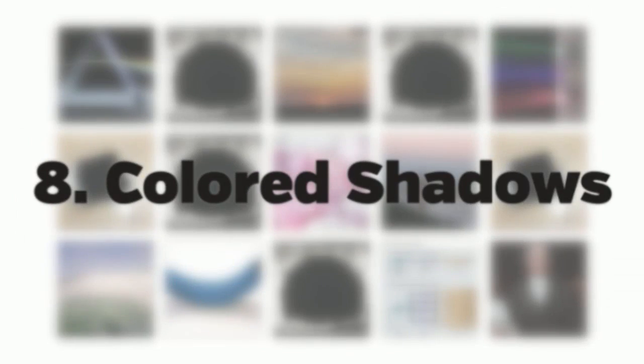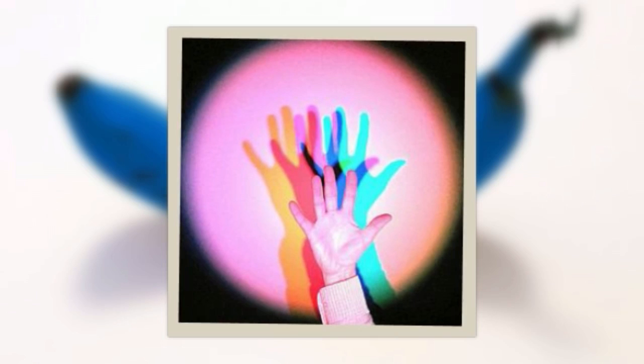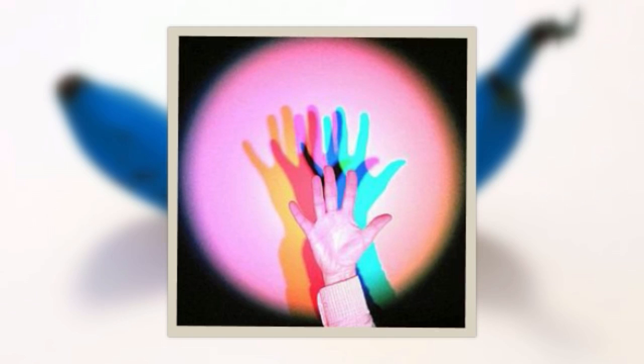8. Colored Shadows. If we look at a window for a couple of seconds and then close our eyes, we'll see its negative, a light frame with a dark exterior. This experiment can be done with colored objects as well. Each color has a complementary one: red has cyan, green has magenta, and blue has yellow.